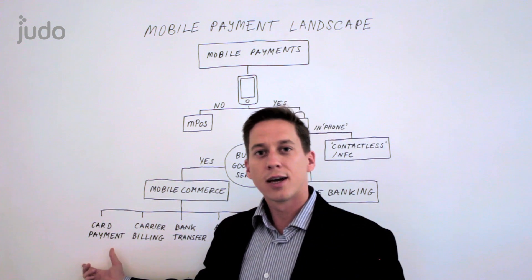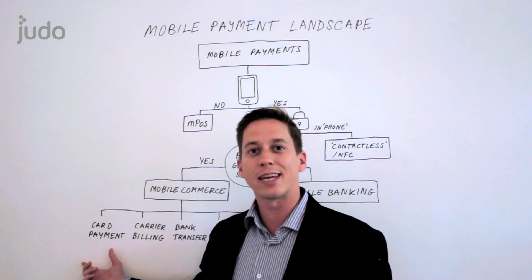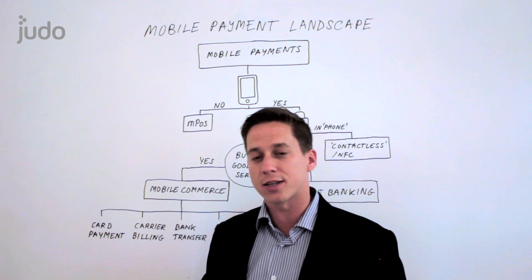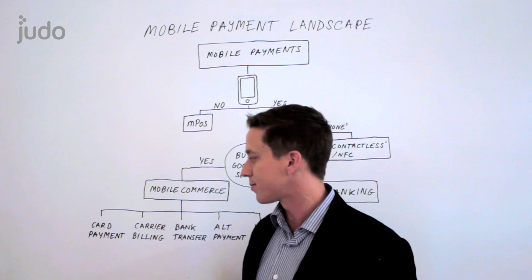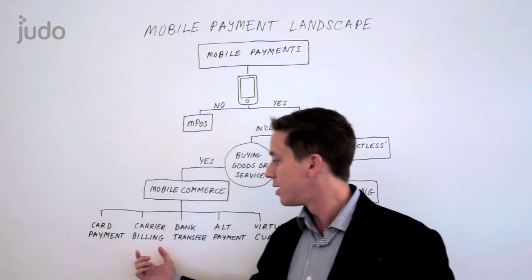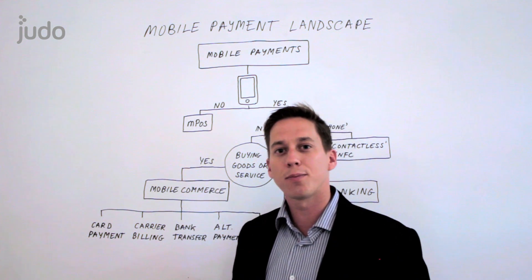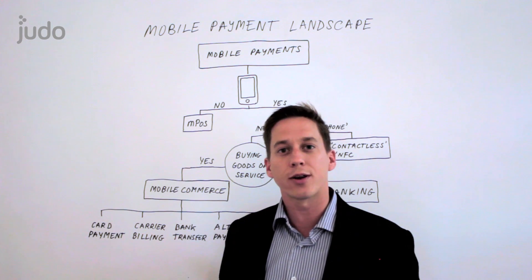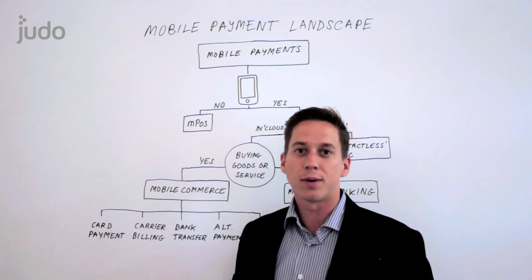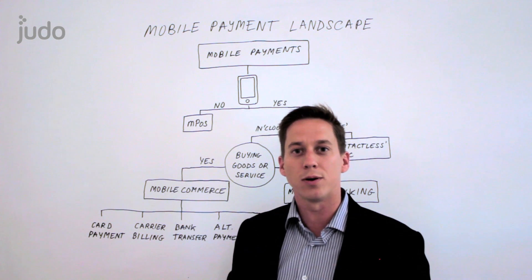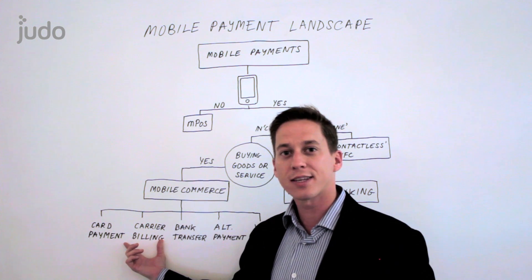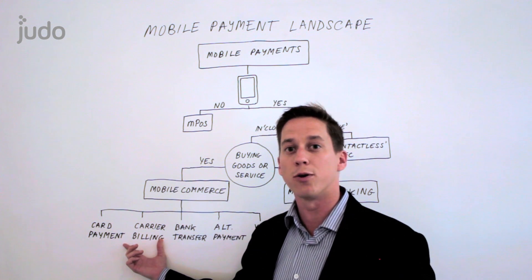In the first instance, if the customer account is held by the issuing bank or the card schemes — so that's Visa, MasterCard, American Express, Diners, JCB, etc. — then that's a card payment, a mobile commerce card payment. Next, if the account is held by a mobile operator or telco — in the UK that's O2 or Vodafone, in the US maybe T-Mobile or Verizon — then that's called carrier billing, and in this instance the charge goes to your mobile phone bill.